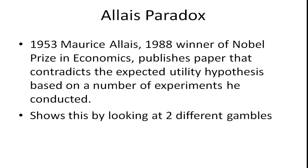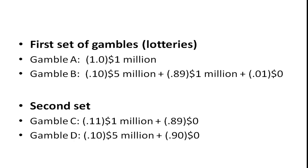This is inconsistent with rational behavior. The most common way we show this is by looking at the following two gambles — or sometimes in economics we call these lotteries — the gamble between A and B, and a second set between C and D. In the first case, in gamble A, there's a 100% chance of receiving a million dollars.